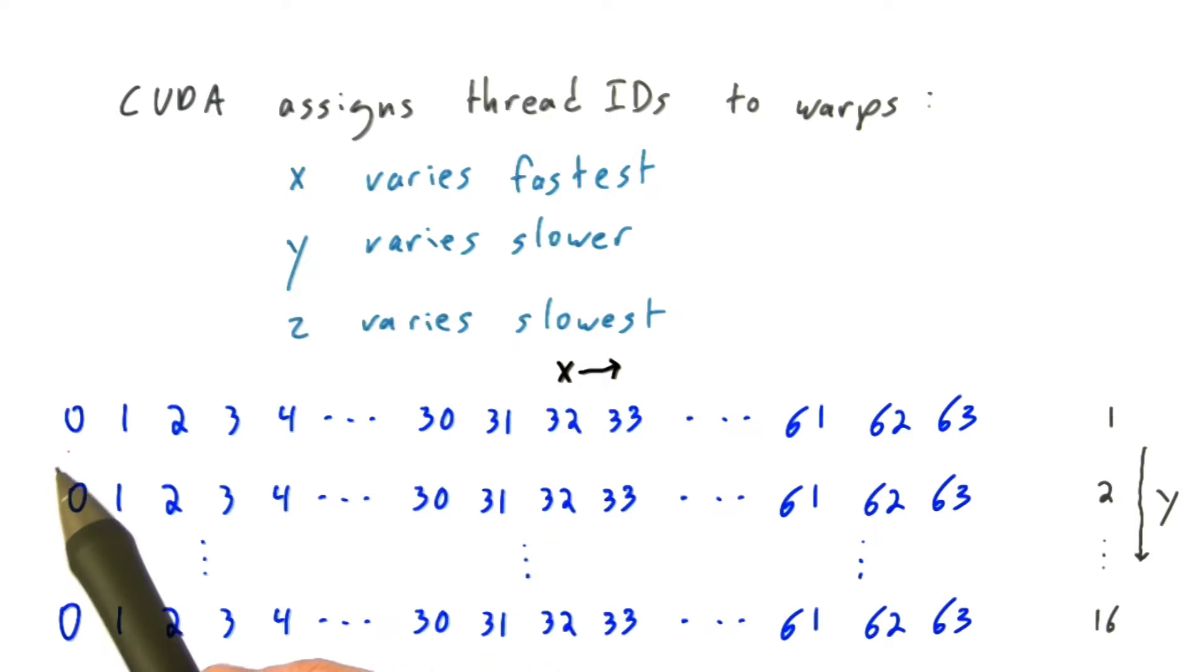So let's just draw that out. Here's thread with X ID 0, X ID 1, X ID 2, and so forth, and these are the Y IDs. So this first row has Y ID 1, the second row has Y ID 2, all the way down to Y ID 16.